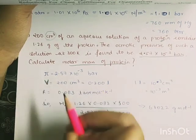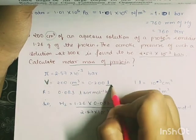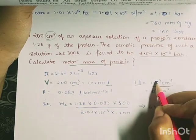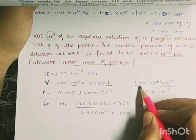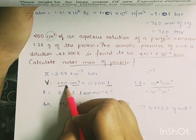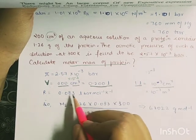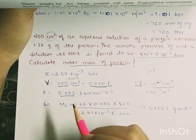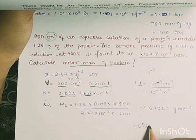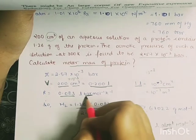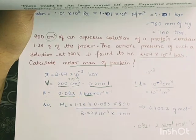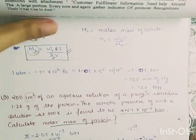The value of R given here is 0.083 litre·bar per mole per Kelvin (slightly different from 0.0821 litre·atmosphere per mole per Kelvin, since the pressure unit is bar here). Using π = w₂RT / (M₂V) and substituting all known values, we can calculate the molar mass of the protein. The answer comes out to approximately 61,022 grams per mole.